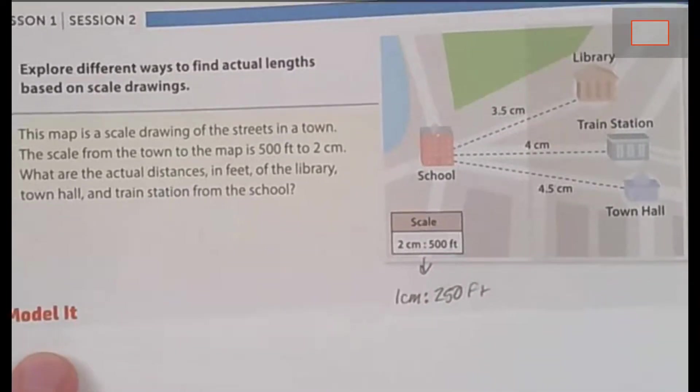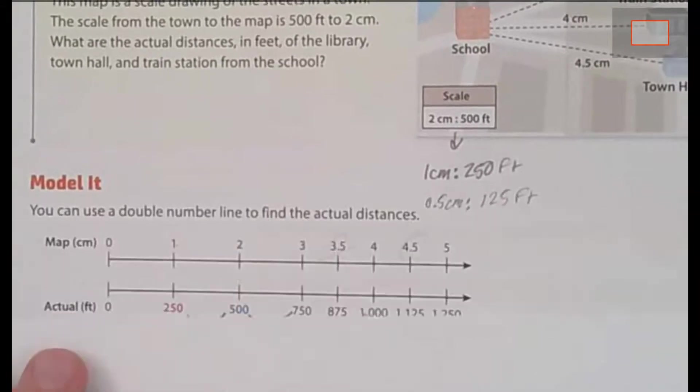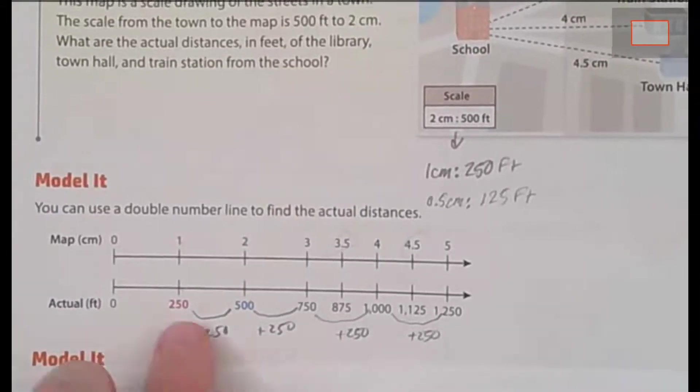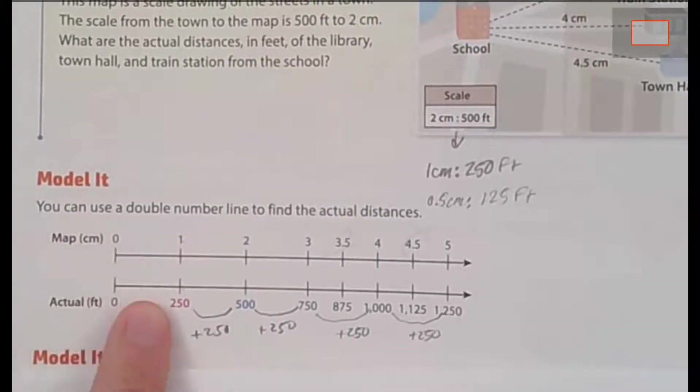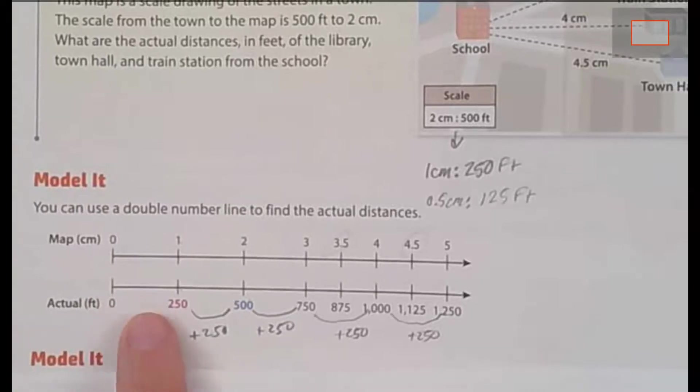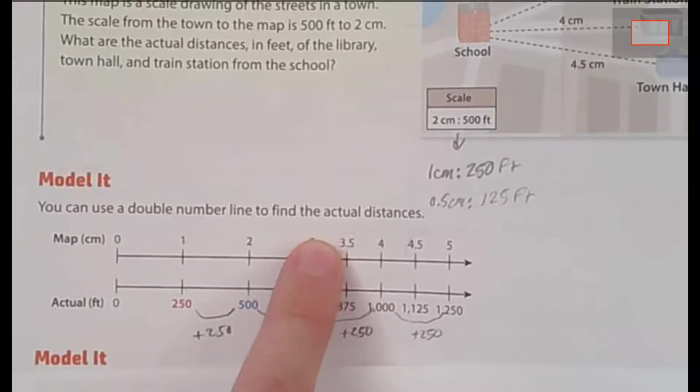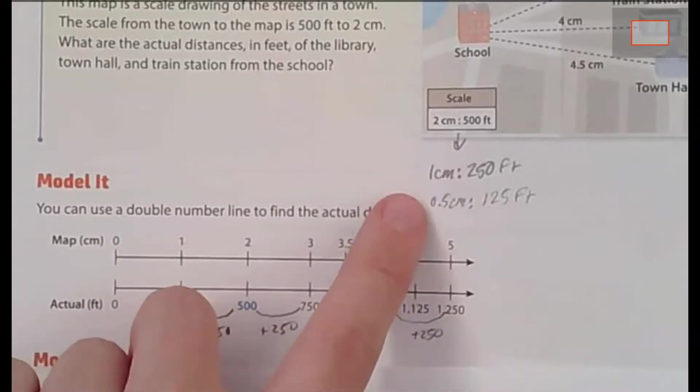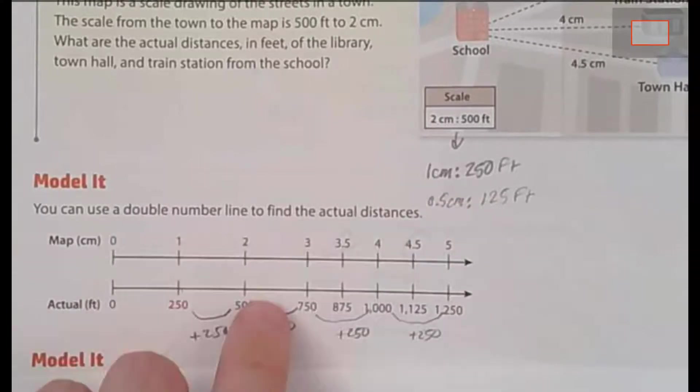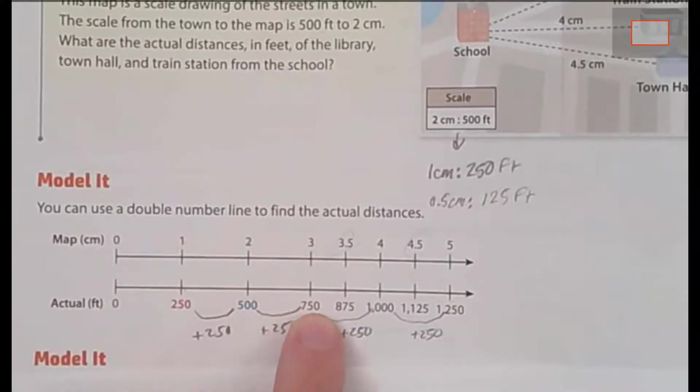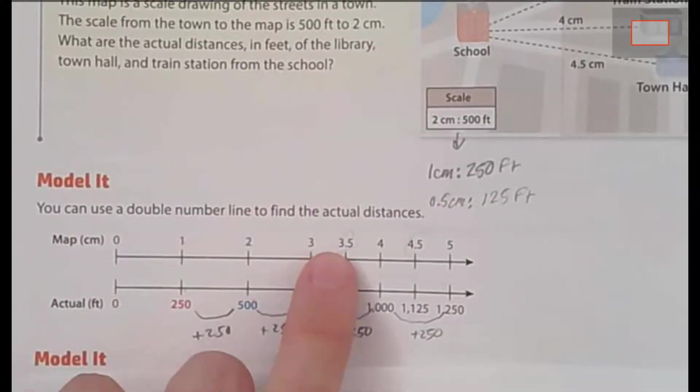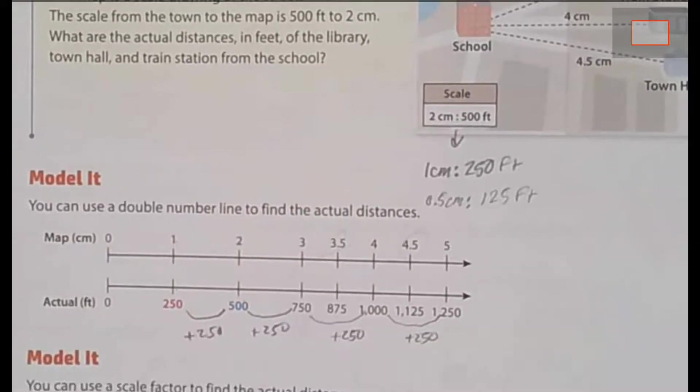Now there's a bunch of different ways that we can model this. We can model this with a double number line, and you'll notice that 1 centimeter is equal to 250 feet. And then we just jump by 250 feet. When we have 0.5 centimeters in between, taking that 250 and dividing it by 2 to get 125. So that's how 750 becomes 875 when we jump from 3 to 3.5.